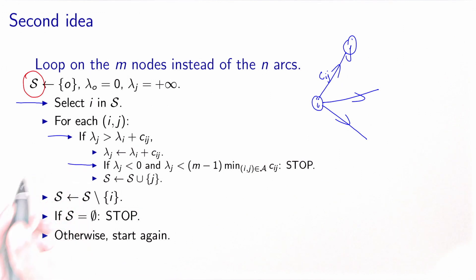This is the role of this statement here. It says that if the label happens to be negative, meaning we have found a path from the origin to node j of negative length, we need to check if we are below the lower bound that we have derived previously. If we are below the lower bound of a simple path, then it means that the problem is not bounded. There is a negative cost cycle in the network. And we can stop immediately.